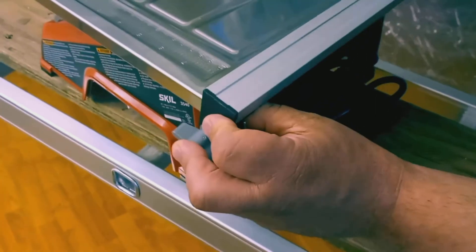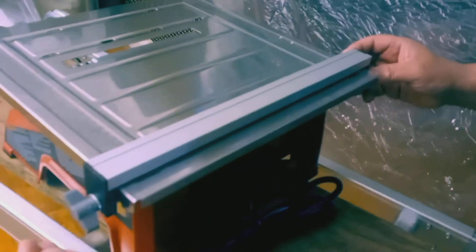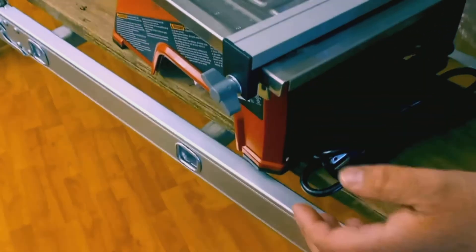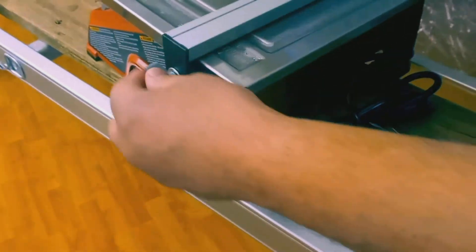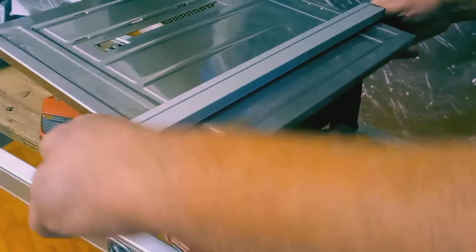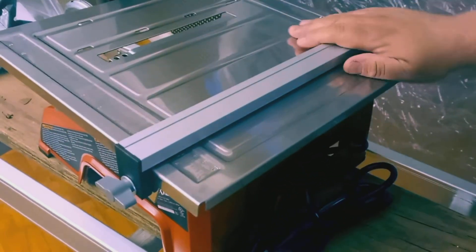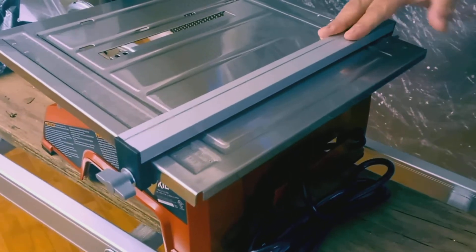So these square pieces, they go into these channels right here, both sides. Okay, make sure you unscrew these side knobs to get them to line up and then to lock them in position. Just tighten them and now you can cut whatever tile or length that you want. Move it up and down and the good thing is you have measurements here.